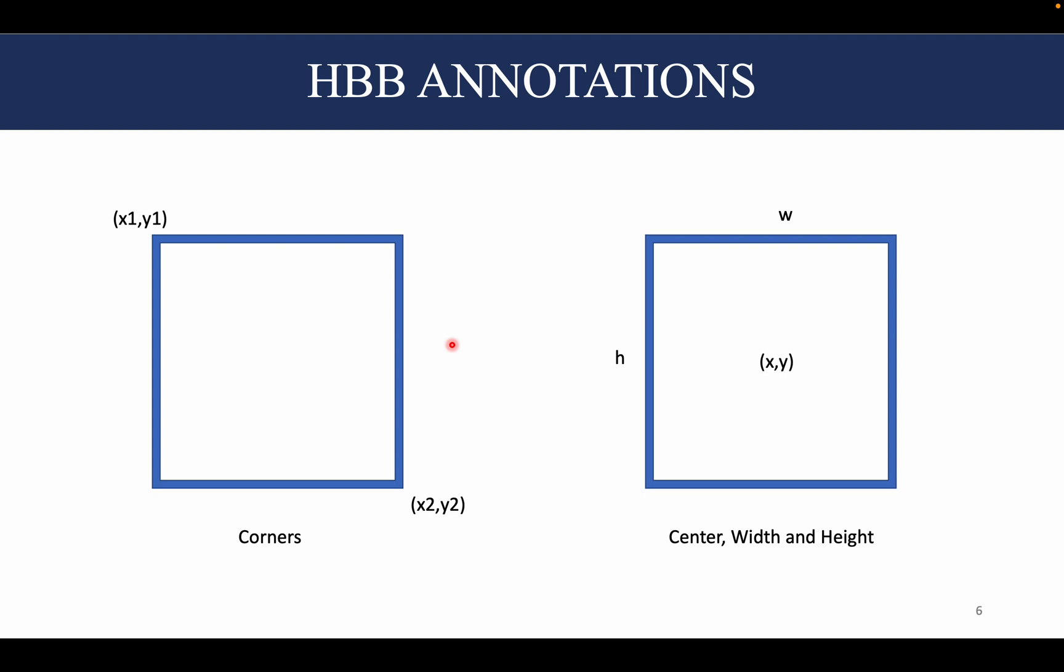If we talk about their annotations, they are done in two types of methods. One is the corner method that uses the corner coordinates of the bounding box to specify it. The other is the center, width, and height method which uses the center coordinates, the width, and the height to specify the bounding box.